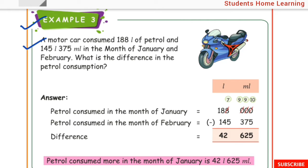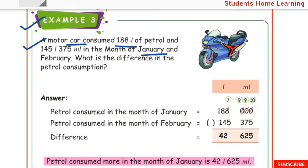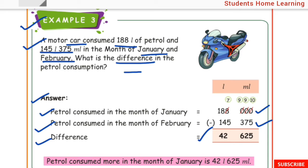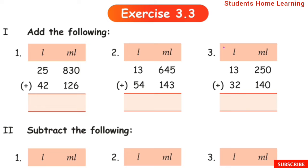Example 3: A motor car consumed 188 liter of petrol in January and 145 liter 375 ml in February. What is the difference in petrol consumption? January: 188 liter 0 ml. February: 145 liter 375 ml. We apply subtraction. Difference: 42 liter 625 ml.